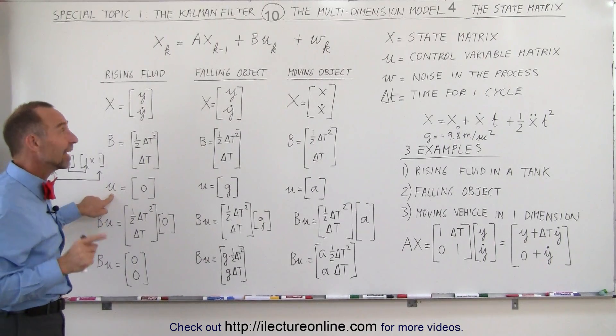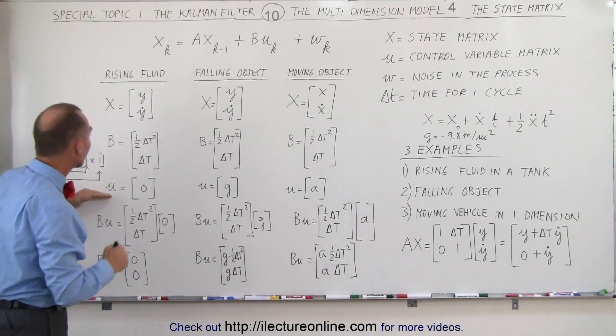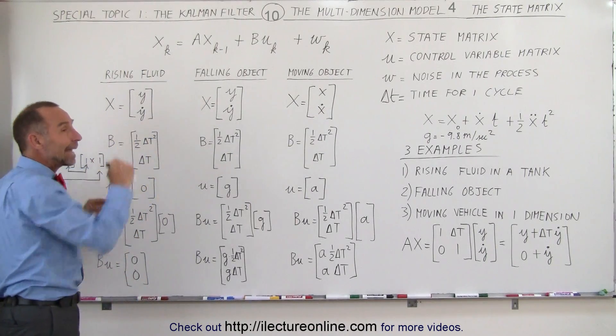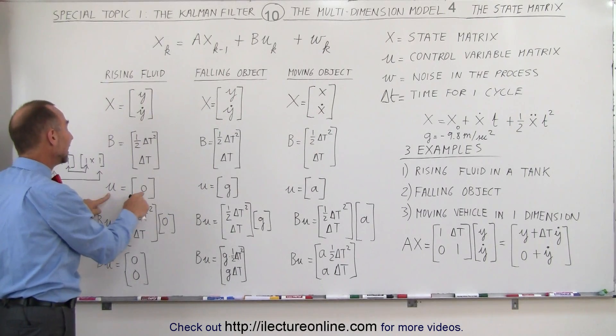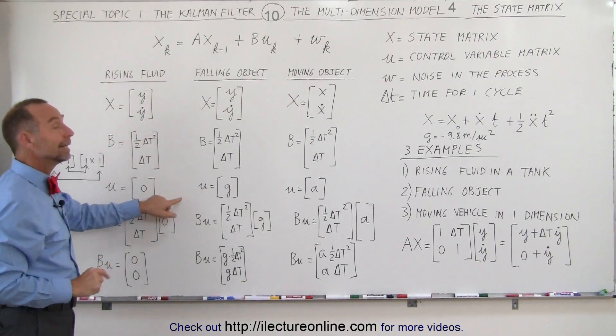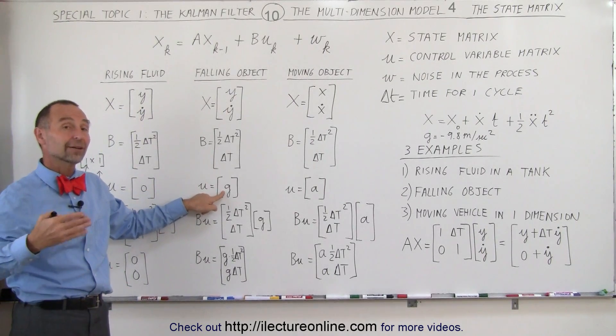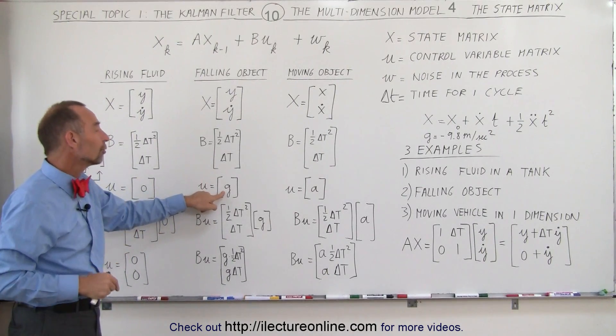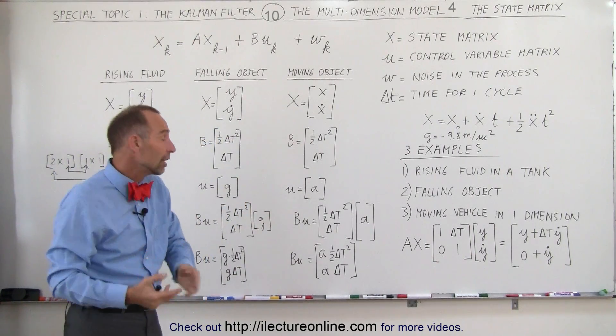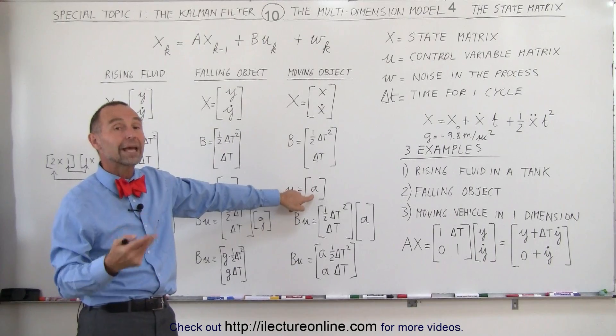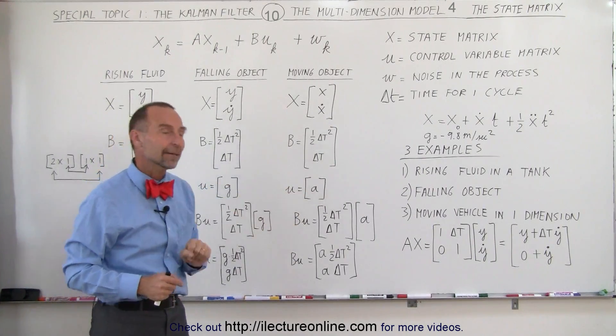The U matrix, in this case, remember the U matrix is the control variable matrix. In the case of the fluid rising in a tank at a constant velocity, there is no acceleration, so the U matrix is equal to 0. In the case of a falling object, the U matrix is equal to g because it's subjected to the acceleration due to gravity. And the moving object in the x direction, if it has an acceleration, we just express it in terms of A. It may or may not have an acceleration, assuming it does, the U matrix is A.